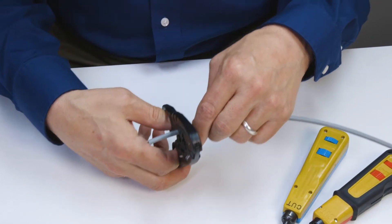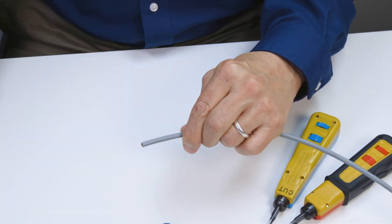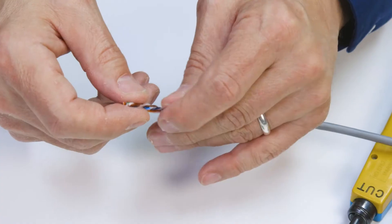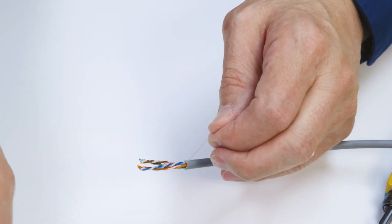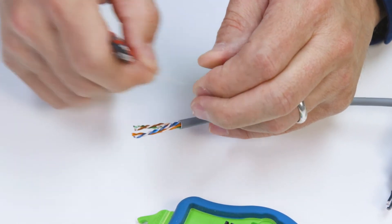With a data wire strip tool, set the proper depth and go around once so that you don't cut into the conductors. Next, break the cable at the strip point and remove the jacket. Now remove the strip string and any other non-conductive elements with a flush cutter.